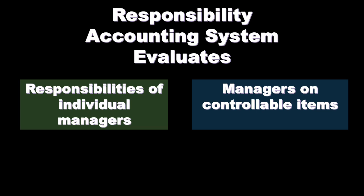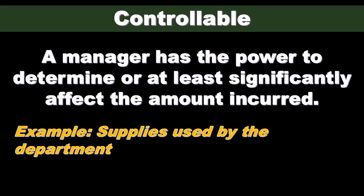As we decentralize, we're going to assign responsibility to particular managers and hold them accountable for different items — those items being the controllable items. We'll assign what is a controllable cost versus an uncontrollable cost to the managers in charge of those units, those segments, those divisions of the organization. A controllable cost is one a manager has the power to determine or at least significantly affect the amount incurred.